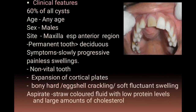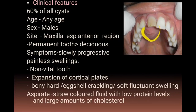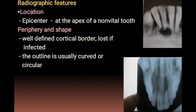Clinical features: the radicular cyst is the most common cyst of the oral cavity, accounting for 60% of all cysts. It can be seen at any age, most commonly in males, with the most common site in the anterior region of the maxilla. It presents as a slowly progressive, painless swelling associated with a non-vital tooth, along with cortical plate expansion showing bony hardness, egg-shell crackling, and soft fluctuant swelling. Aspiration yields straw-colored fluid with low protein levels and large amounts of cholesterol.